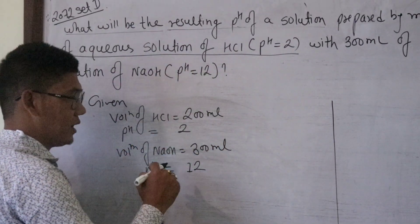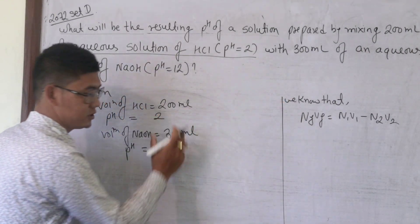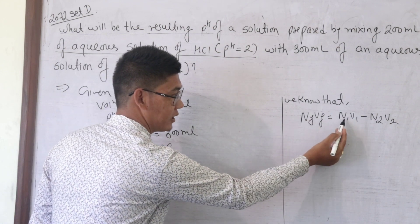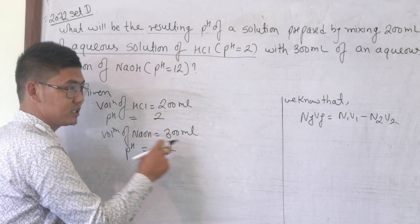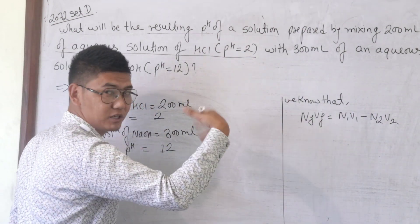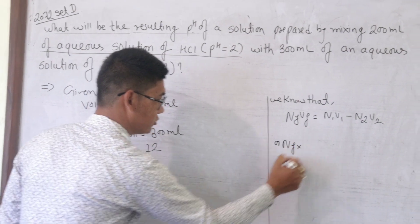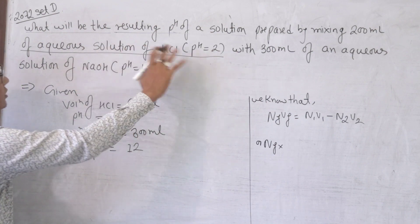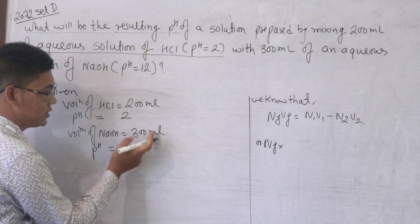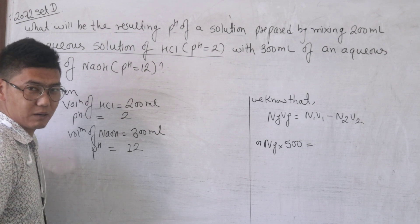If we understand the mixing concept, we need to find the resulting pH when acid and base are mixed. The formula involves normality and volume. The final volume will be 200 plus 300, which equals 500 ml.